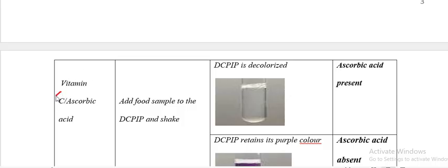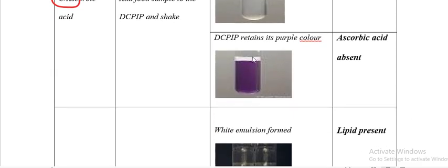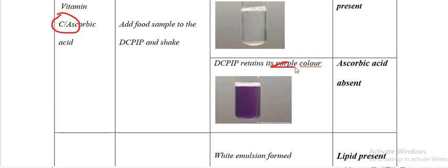The next food substance is vitamin C, also called ascorbic acid. The procedure is the opposite: you put DCPIP in the test tube first, then add the food sample. Shake — if DCPIP is decolourised, ascorbic acid is present. When DCPIP retains its colour, ascorbic acid is absent.